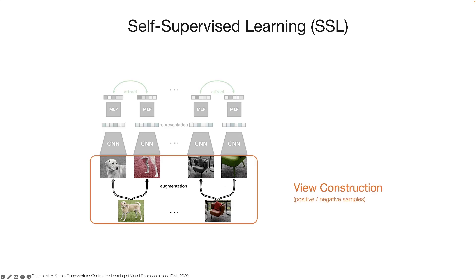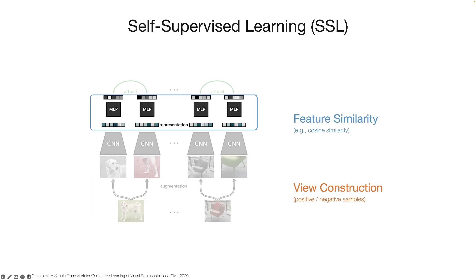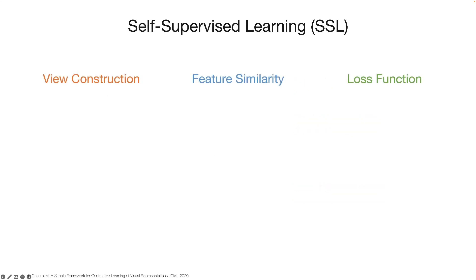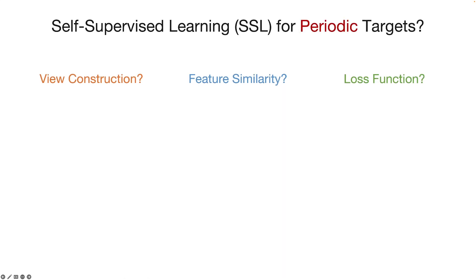First, we need to construct effective views to define useful positive and negative samples. Second, after extracting features, we use a similarity function to measure the distance of these samples in the high dimensional space. Finally, we leverage a loss function to separate positive and negative pairs. These three components are generally defined for SSL, but what about learning periodic targets?